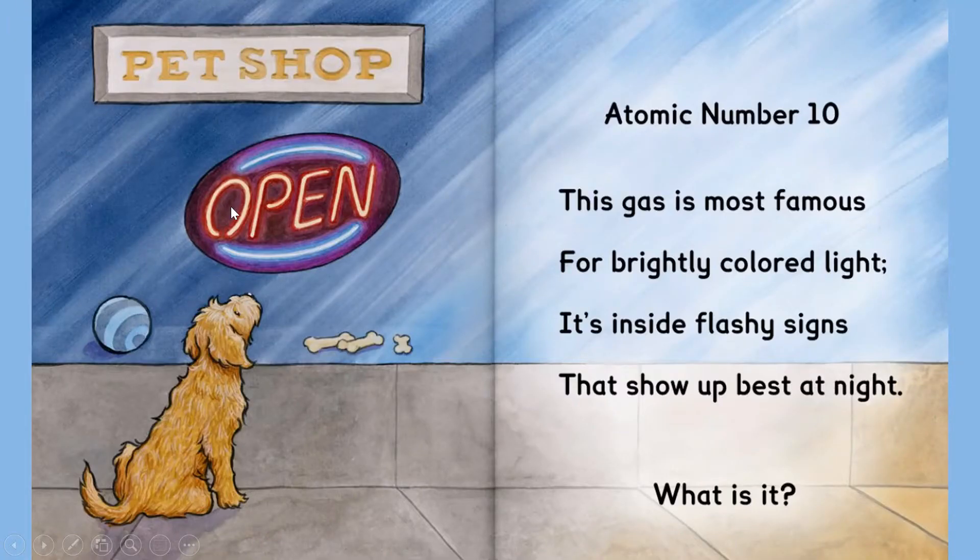Atomic number ten. This gas is most famous for brightly colored light. It's inside flashy signs that show up best at night. What is it?